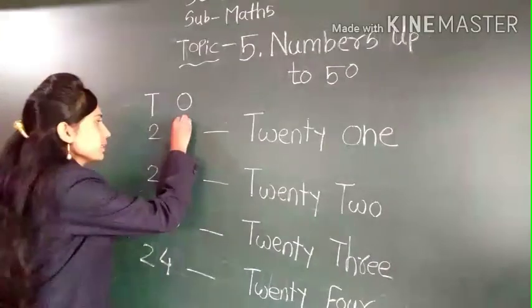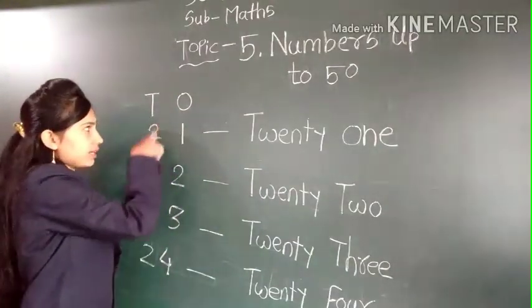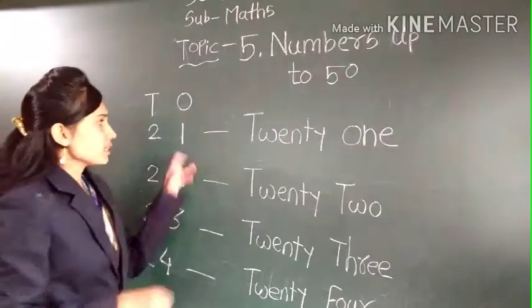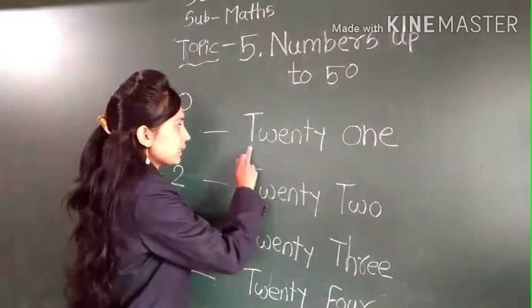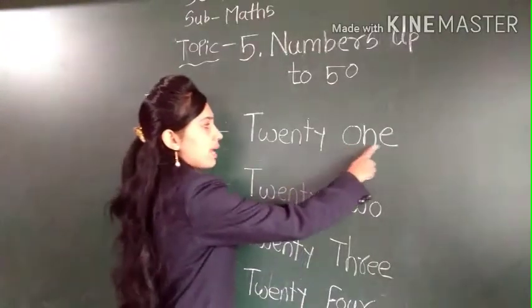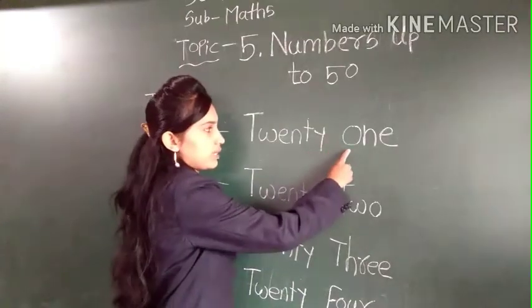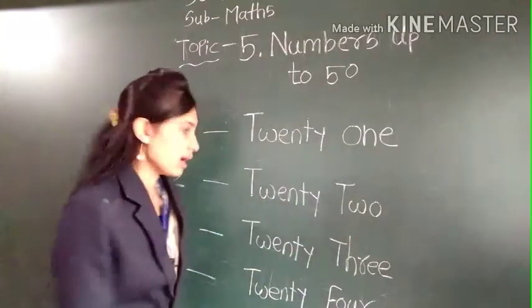See here. 21. 1 one and 2 tens. And what is the spelling of 21? T-W-E-N-T-Y, 21, O-N-E, 1. T-W-E-N-T-Y, 21, O-N-E, 1.